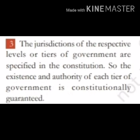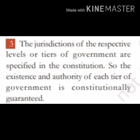Point three: The jurisdiction of the respective levels or tiers of government are specified in the constitution. The existence and authority of each tier of government is constitutionally guaranteed. It means, government ke jo adhikar shetra hain unko constitution mein specified kiya gaya hai — likha gaya hai. Is liye constitution government ke har level ke existence aur authority ki guarantee aur suraksha deta hai. Agar state level ko koi power di gayi hai toh woh constitution mein likhi hui hai, aur sabhi levels of government independent hote hain.